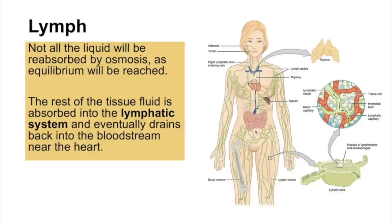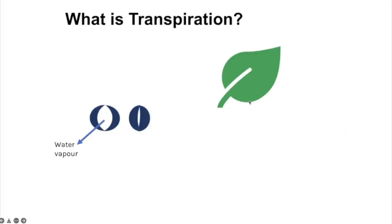Not all liquid is reabsorbed by osmosis — eventually equilibrium is reached between the water potential inside the capillary and the tissue fluid. Any water not reabsorbed enters the lymphatic system instead, which eventually drains into lymph vessels near the heart, returning the liquid to the blood. This is how the body maintains blood liquid volume.